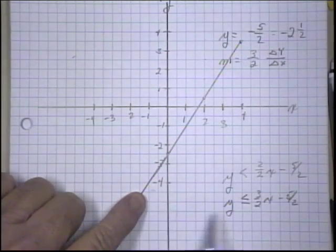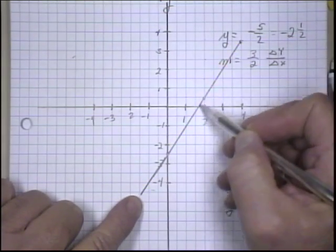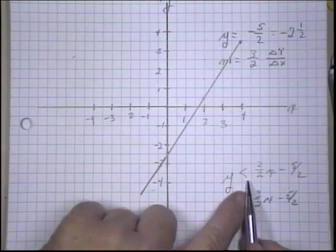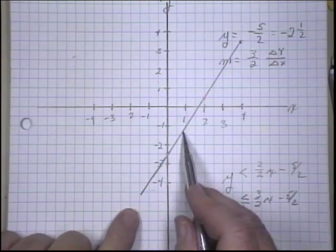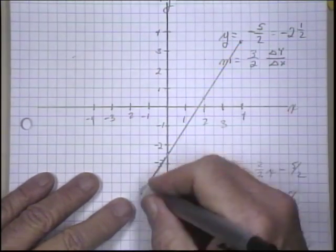If I had y was less than or equal to 3 halves x minus 5 halves, that would be, I would draw a solid line because that would mean the values on this line are actually part of the inequality. But because y is less than this line, the values on the line itself are not part of the inequality.